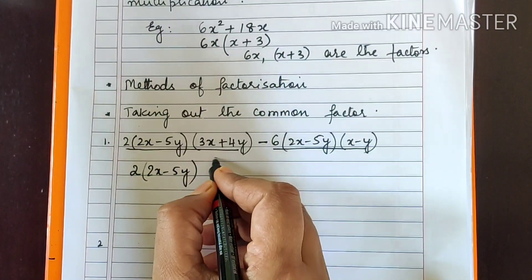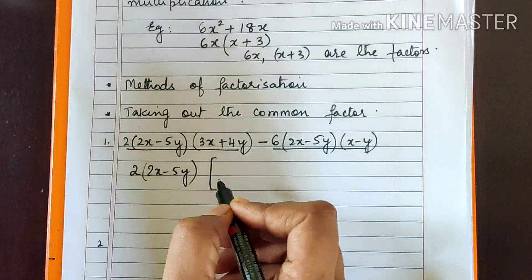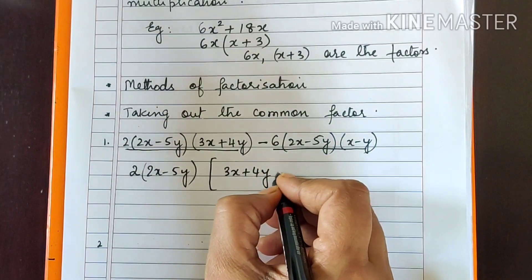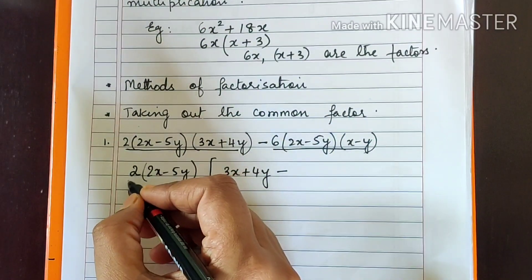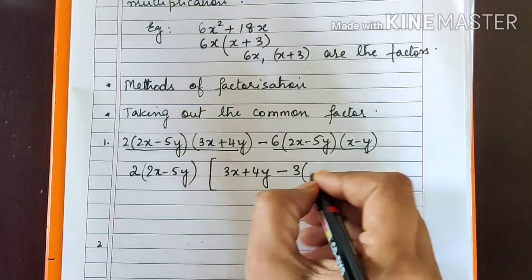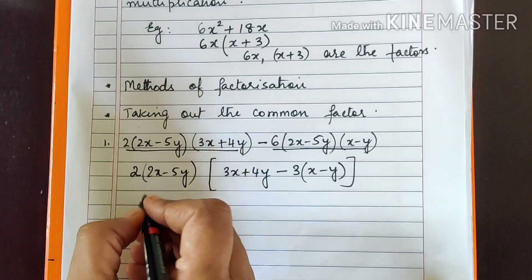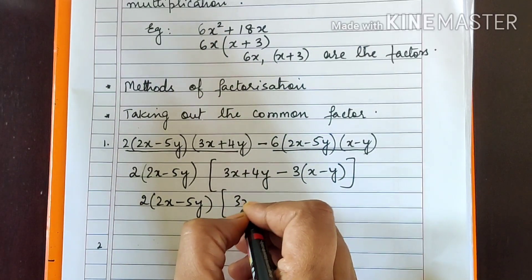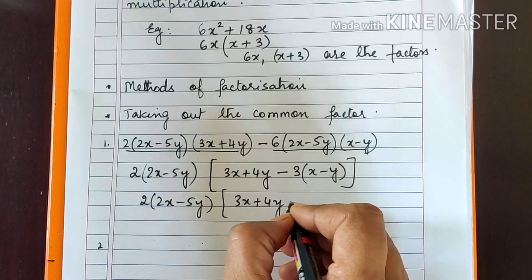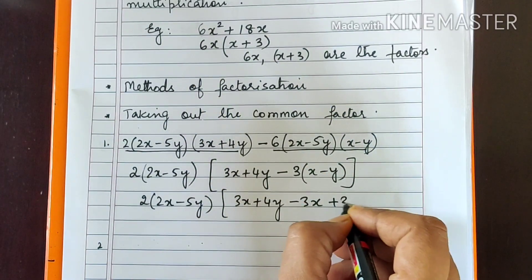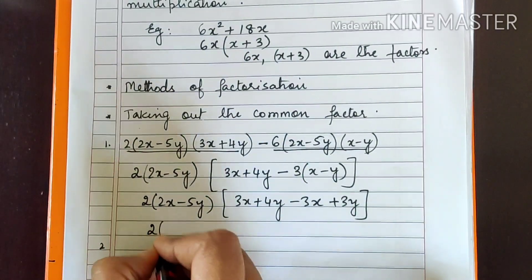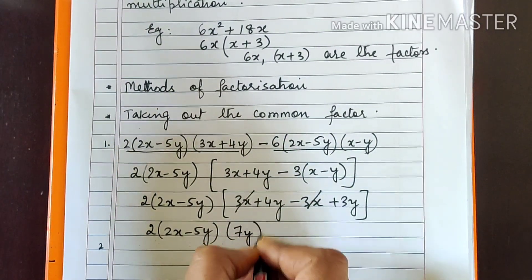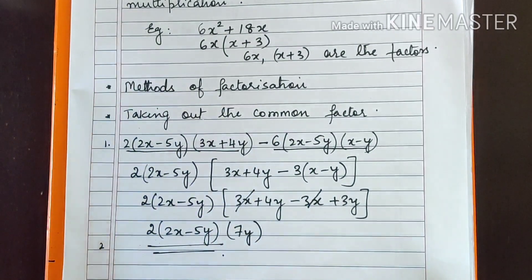There is no other common factor. So take 2(2x - 5y) out. From the first term you are left with (3x + 4y), and from the second, removing 6 leaves 3, giving minus 3(x - y). Now multiply: minus 3 times (x - y) gives minus 3x + 3y. So you have 2(2x - 5y)(3x + 4y - 3x + 3y). The 3x and minus 3x cancel, leaving 2(2x - 5y)(7y).